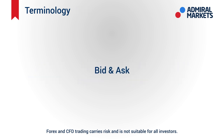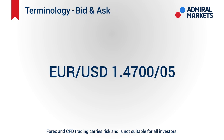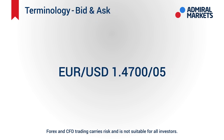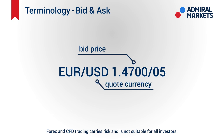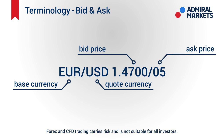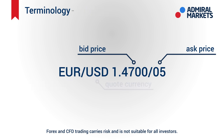Bid and ask are the two elements that make up a Forex quote. The bid price is the amount you will receive in the quote currency when you wish to sell one unit of the base currency. The ask price is the amount you need to pay in the quote currency to be able to buy one unit of the base currency.